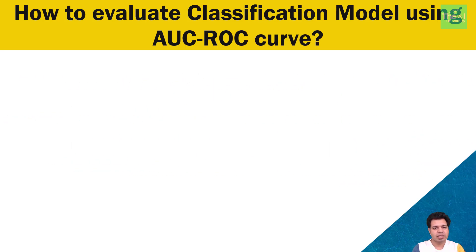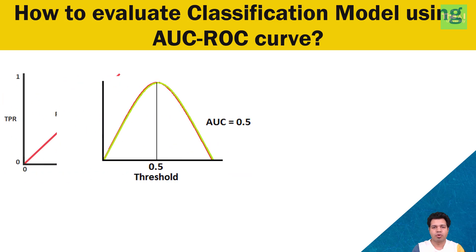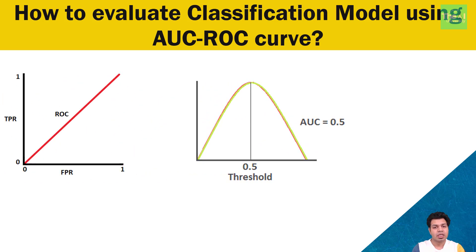When AUC or area under curve is 0.5, both distribution curves are completely overlapping. The ROC curve shown here is a random line in the middle. This represents the worst classification model because it has no discrimination capacity to distinguish between positive class and negative class.